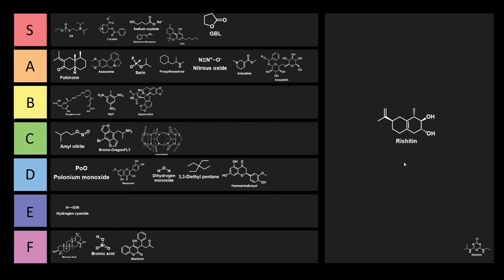Now, we have two left, rishitin and atrazine. Rishitin is a terpenoid compound produced by plants in the Solanaceae genus. This includes plants such as peppers, tomatoes, potatoes, and rishitin was named after the potato cultivar Rishiri, which was discovered in 1968. So, you might be thinking, you gotta be rishitin me. This has to go at least into B tier.